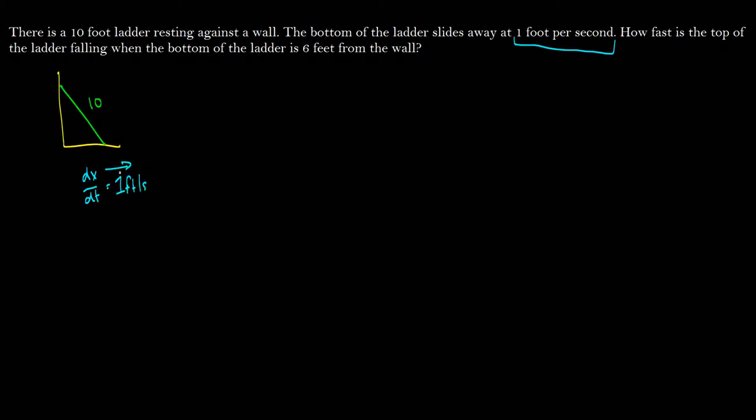How fast is the top of the ladder falling when the bottom of the ladder is six feet from the wall? So we want to know how fast it's falling when this distance here is equal to six. And we have a notation for that. We say dy/dt when x is equal to six is equal to what? And we know that dx/dt is equal to one.